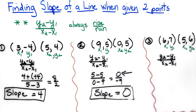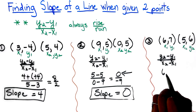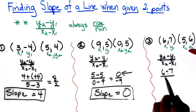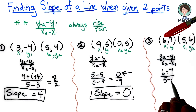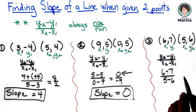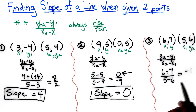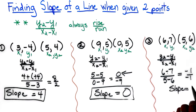I put in my values: y2 is 6, y1 is 7, so 6 minus 7, and for my denominator I have 5 minus 6. Working this out, 6 minus 7 is negative 1, and 5 minus 6 is negative 1. So my slope is equal to negative 1 divided by negative 1, which is positive 1.